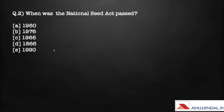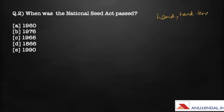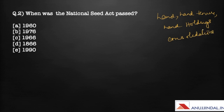The next question asks: when was the National Seed Act passed? Before answering, let's briefly cover important legislations and acts related to agriculture. The first category is land legislations and reforms, which mostly deals with land tenure, land holdings, and consolidations. One of the most important acts is the Land Acquisition Act, which was enacted in 1894.